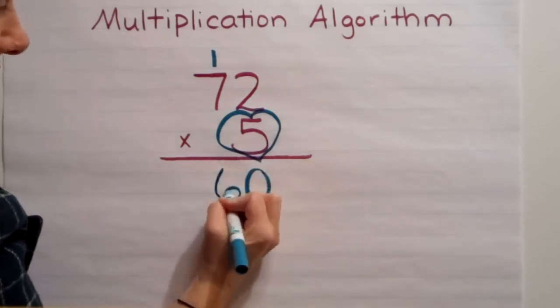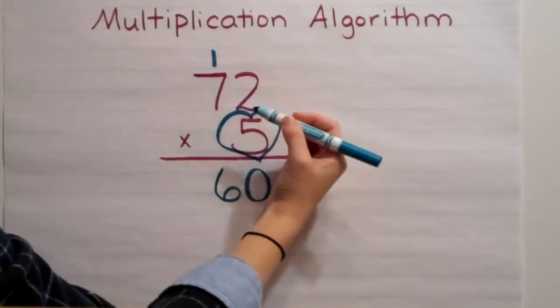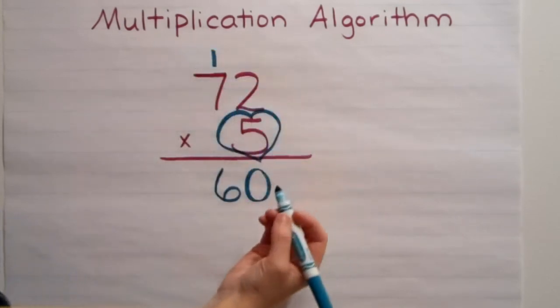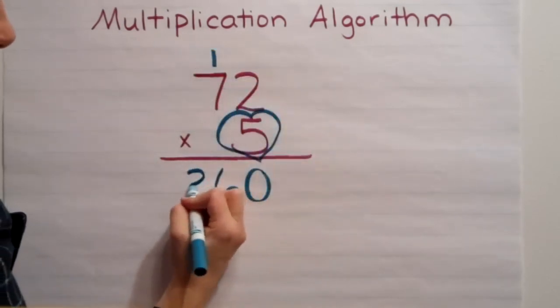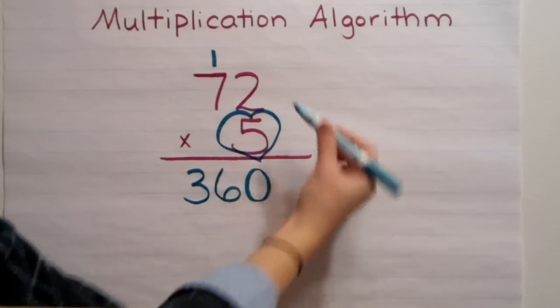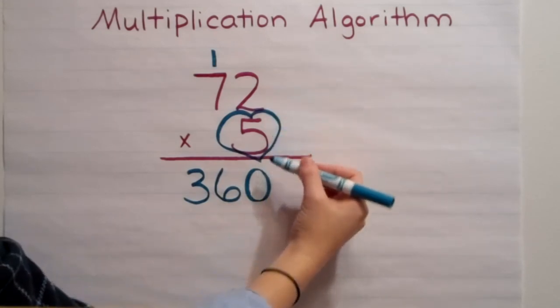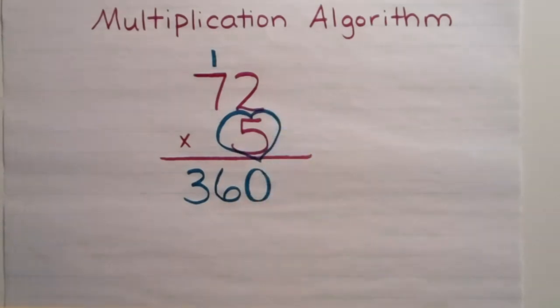I'll put the 6 down. Now, if there was another place value, I'd regroup that 3, but since there's not, I'm going to bring it straight down. So 72 times 5 has a product of 360.